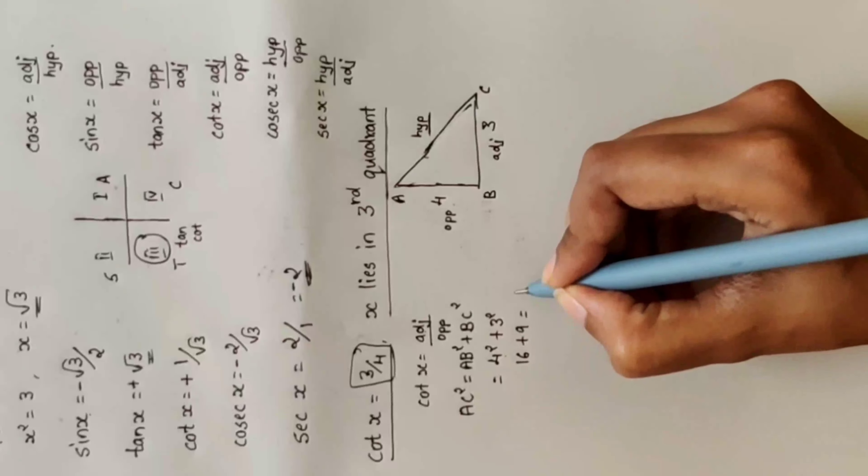Last one: tan x = opposite divided by adjacent. Wait — cot x was given as adjacent divided by opposite, so tan is the reverse: opposite divided by adjacent = 4 divided by 3. And tan x = 4 by 3.